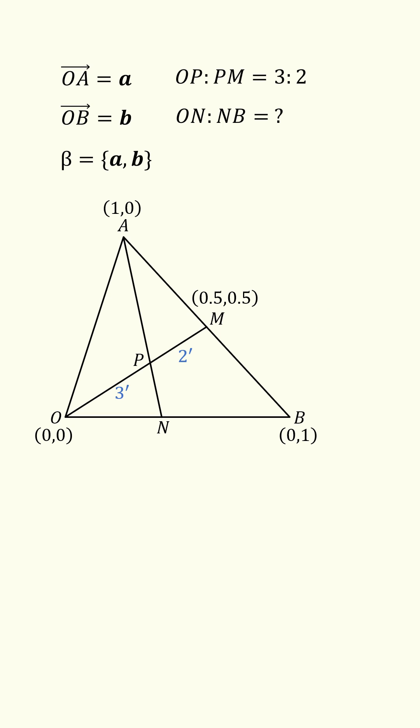Then OP to PM has a ratio of 3 to 2, so P is equal to 3/5 of (O plus M), and that works out to be (0.3, 0.3).